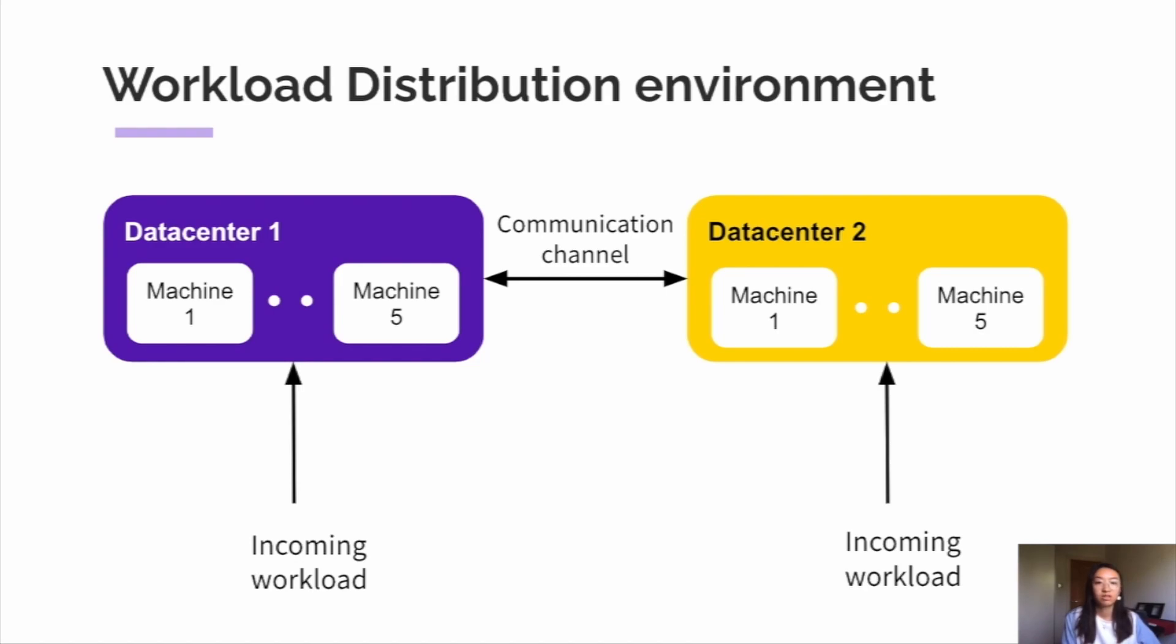We specifically created two data centers so that we could apply state space decomposition easily. So if requests arrive at the first data center, this will be considered as a transition in the first state subspace. Whereas if requests arrive at the second data center, those transitions are in subspace 2.